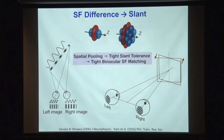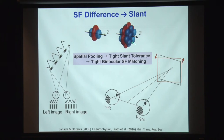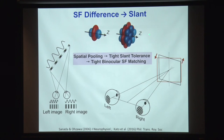Intuitively, we're talking about spatial pooling of disparity-tuned subunits to make a really wide, flat, hamburger-type receptive field organization. If you think about how much tolerance this receptive field gives you, the plane has to lie within the excited area. The tolerance of angle that is allowed is really smaller for this spatially pooled unit. This slant is actually the result of the difference in left and right spatial frequencies. So pooling in space gives you really tighter slant and tilt angle tolerances.